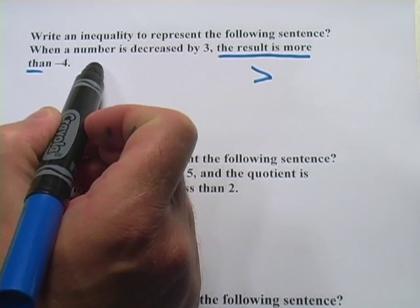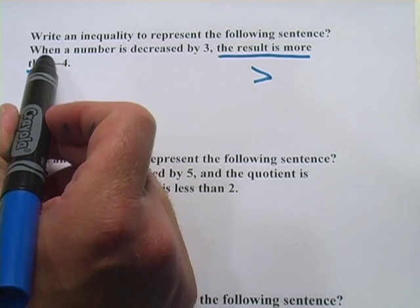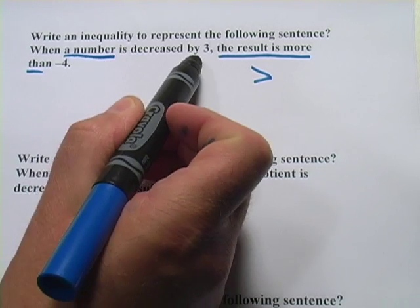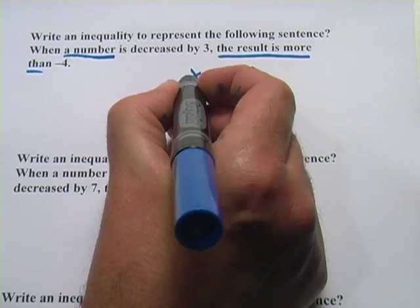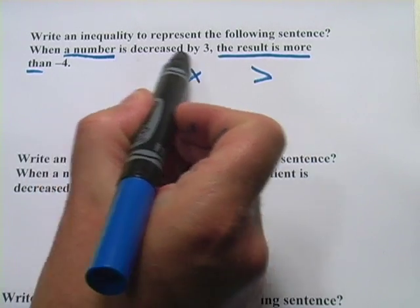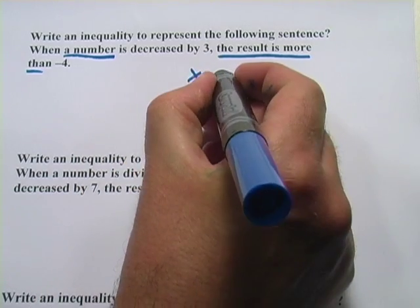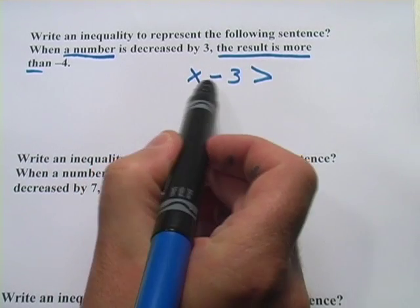Let me back up a little bit and see what's on the left here. It says, when a number is decreased by 3. When you see a number, that's usually your variable. So we're going to call that x. And then to decrease something by 3, you would subtract 3. So we can call that x minus 3.